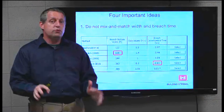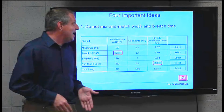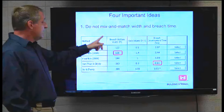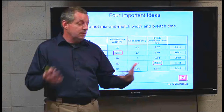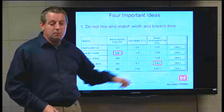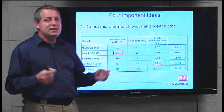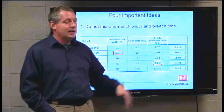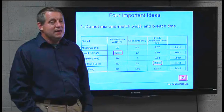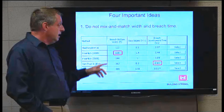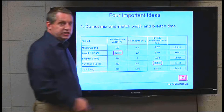Important idea number one: don't mix and match the breach width and the breach time. This happens pretty often — people take the maximum breach width from one equation and the minimum breach time from another to be conservative. Do not do that. These equations have internal self-correlation, so the width and the time are connected. Always use the width and the time from the same equation; otherwise you introduce spurious conservatism outside the uncertainty already associated with these analyses.